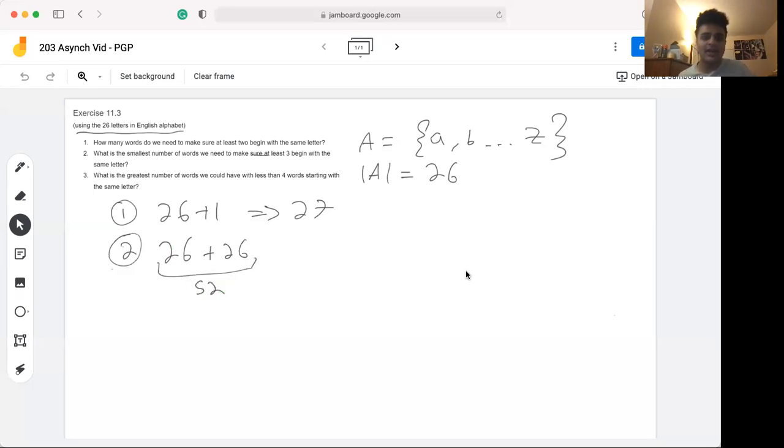If we applied that again, we could grab 52, which would be 26 plus 26, and now we would have 52 words where only two of them share the same starting letter for every single one, meaning we have two words that start with an A, two words that start with a B, all the way to two that start with a Z.